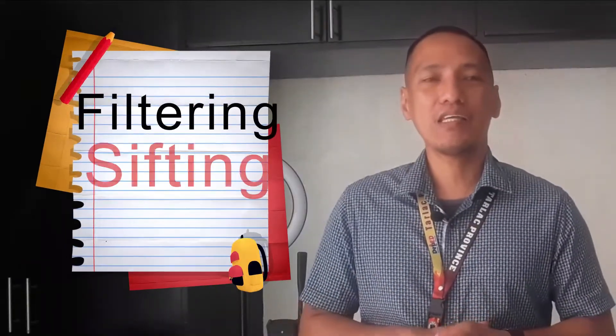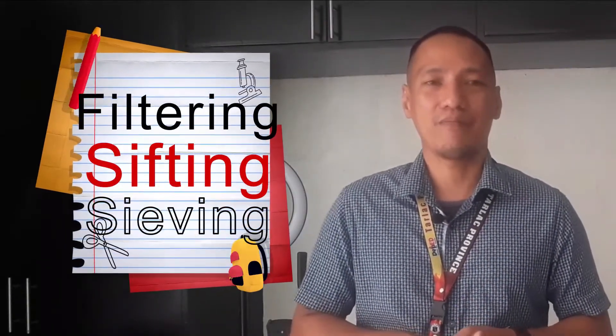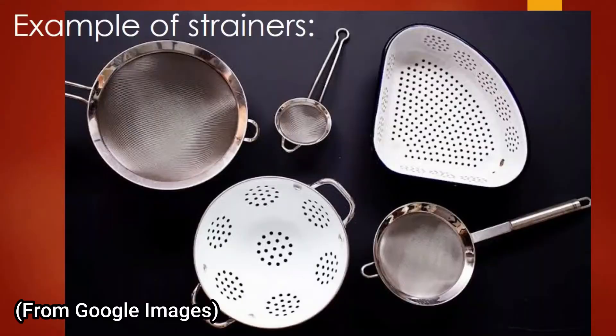Let's move to the next group: filtering, sifting, and sieving. Technically, these three are almost the same, which is why they are grouped together — they all use a strainer or salaan. But let's give them more distinct definitions to differentiate them from each other. Number three: filtering. Filtering is a method of separating solid particles, soluble solids, or impurities from liquids. Filtering is also used in separating impurities from gas.